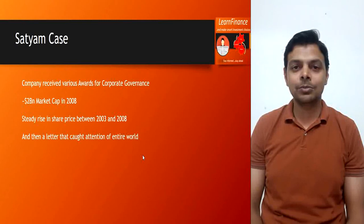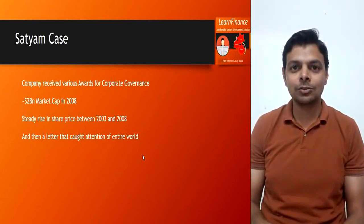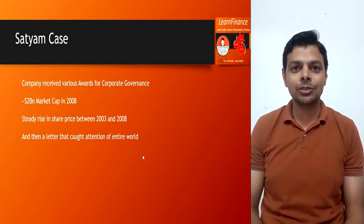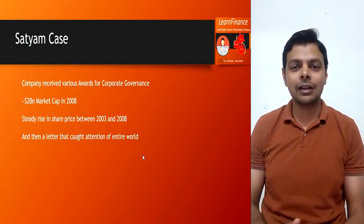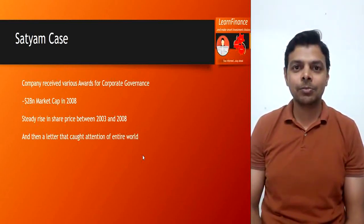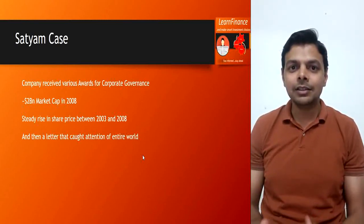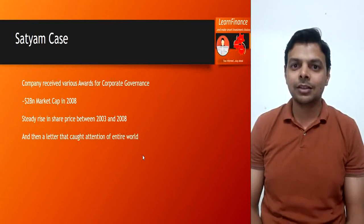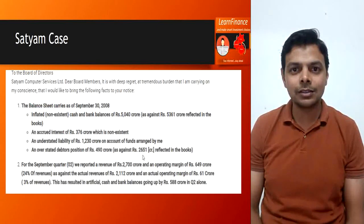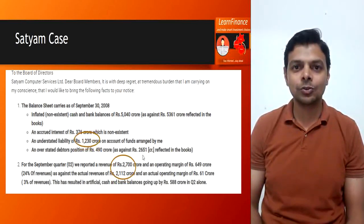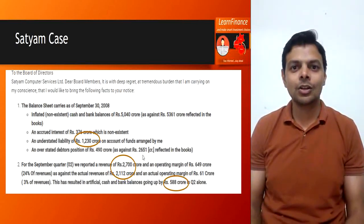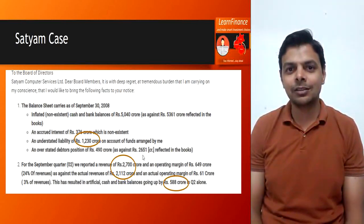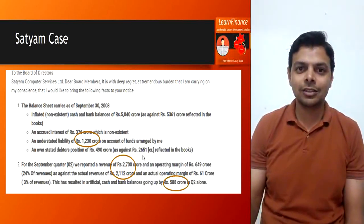All of a sudden in 2008, Satyam was on the verge of collapse. A company known for corporate governance, whose share price was going up between 2004 and 2008, and which was almost a 2 billion dollar company — suddenly collapsed. What happened? Years of misreporting in financial statements: revenues were overstated, costs were understated, bank balances and investments shown on the balance sheet did not exist, and reported margins were incorrect.